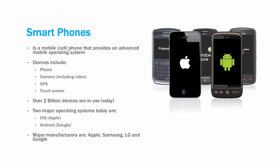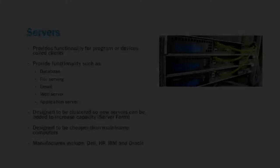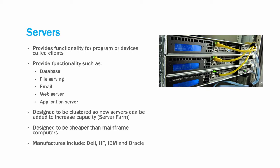Major manufacturers include Apple, Samsung, LG, and Google. The next type of computer on the list is the server. Servers became popular during the rise of the internet and the World Wide Web. These computers provide functionality for programs or devices called clients. Servers provide functionality for applications such as database, file servers, email servers, web servers, and application servers. Servers are designed to be clustered so that new servers can be added to increase capacity easily. Manufacturers include Dell, HP, IBM, and Oracle.